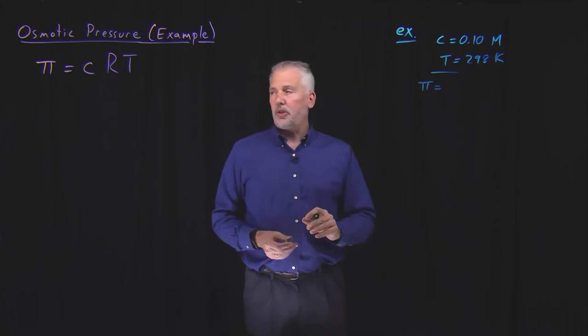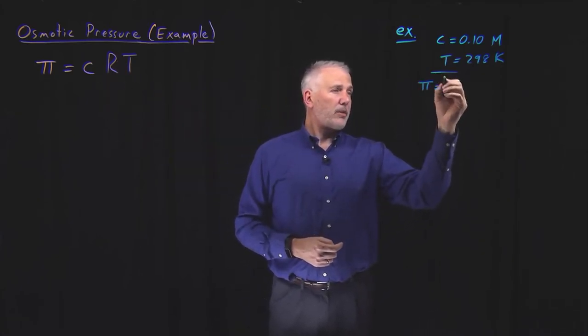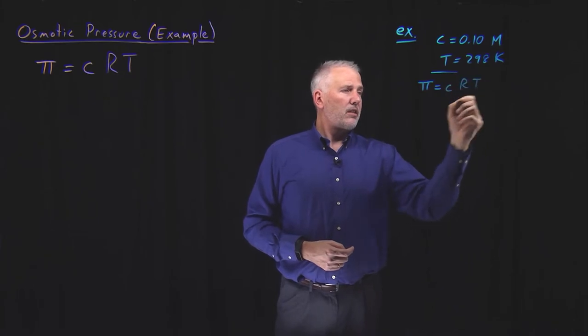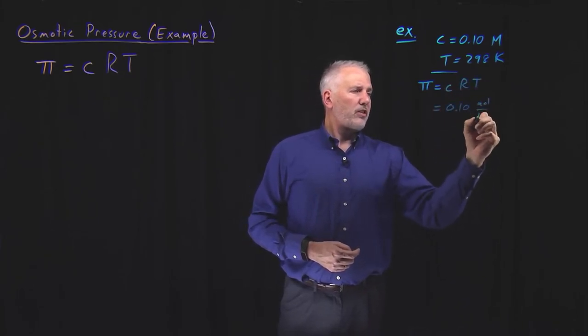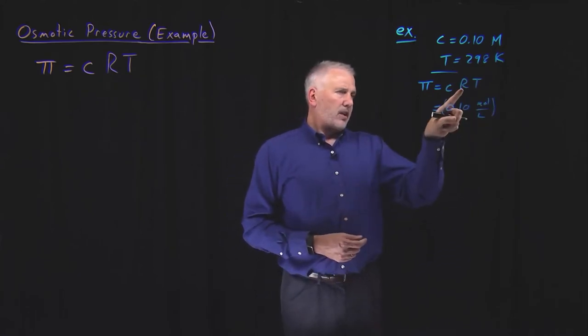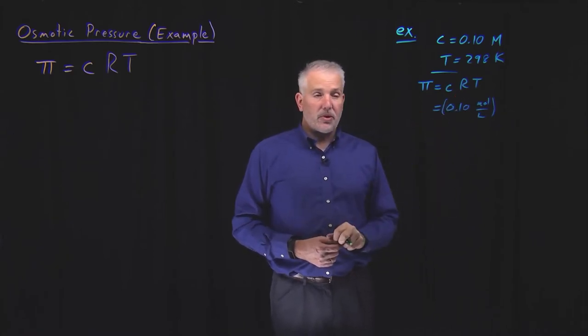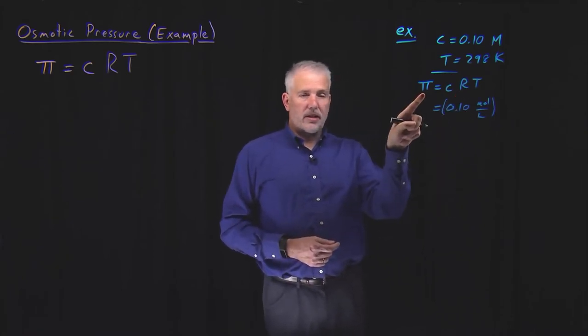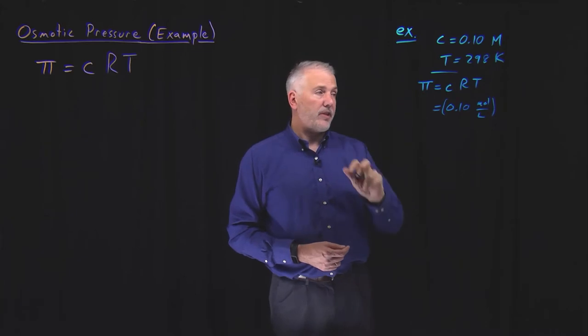So the osmotic pressure of that solution is easy to calculate. C times R times T, 0.1 moles per liter is our concentration. The gas constant, it turns out not to be convenient to use the value of the gas constant in joules per mole Kelvin, because what we're going to want out on the left side when we're done is a pressure with units of atmosphere, for example.